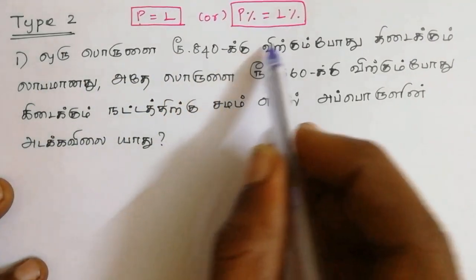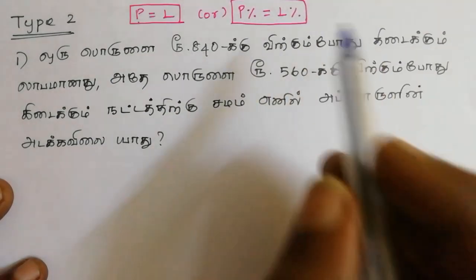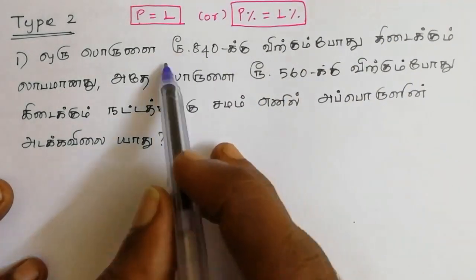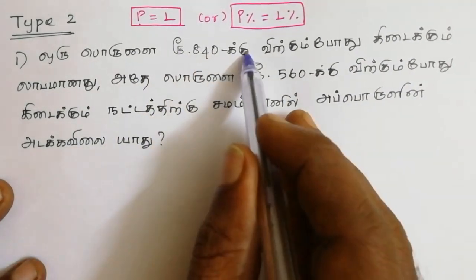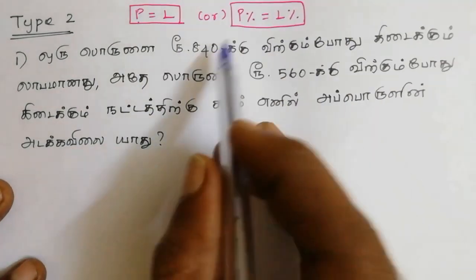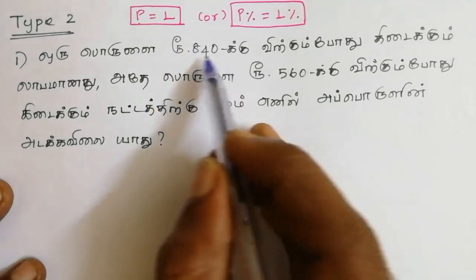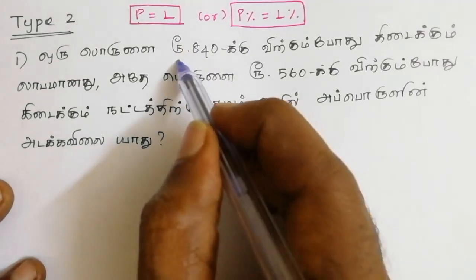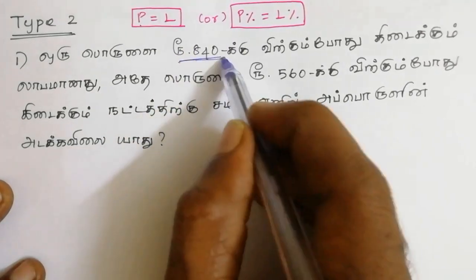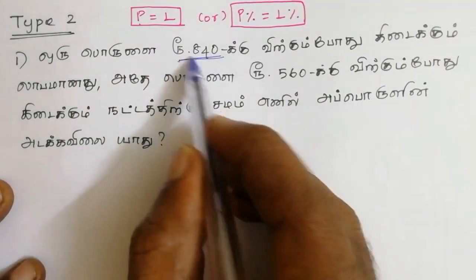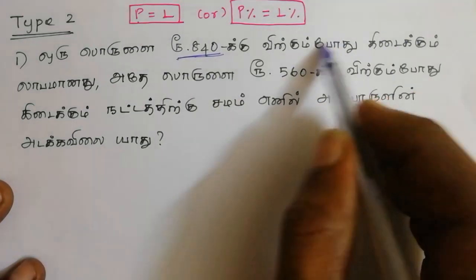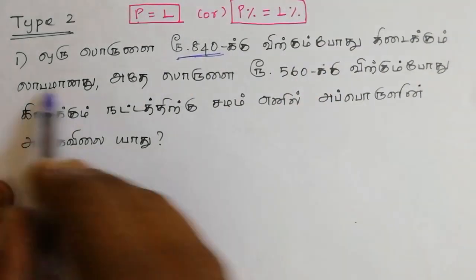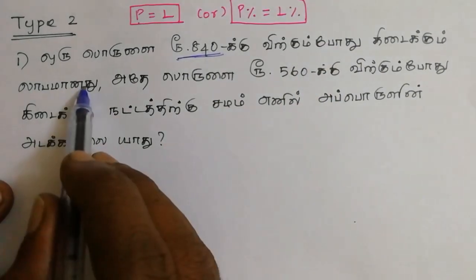1.406. So, 1.501. Then it will be 440. Then 1.451. 1.401. So it will be 440. What is it? It's 540. So 1.401. 1.451.